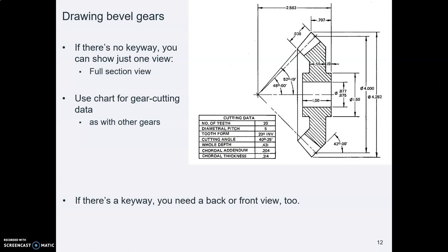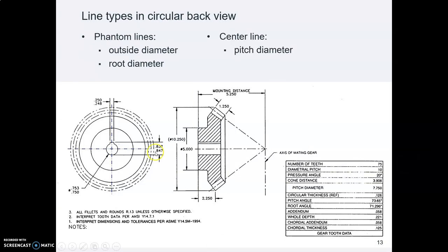However, most cases do have a keyway, and the one that we're going to draw does have a keyway. So here's an example out of our book of a bevel gear that does have a keyway. So in this case, you do need both a section view and a circular view.